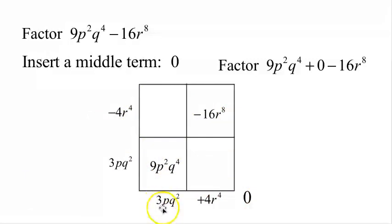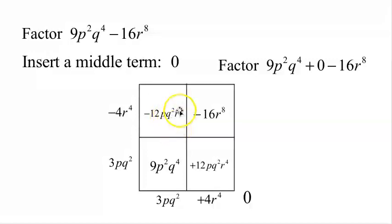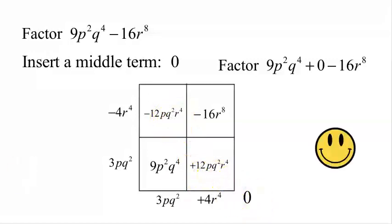Now how about our cross terms? 3 times negative 4 is negative 12, times p, times q squared times r to the 4th in one cell. And 12 times p times q squared times r to the 4th in the other. Does negative 12pq squared r to the 4th plus 12pq squared r to the 4th equal 0? Yes, it does. So we are successful.